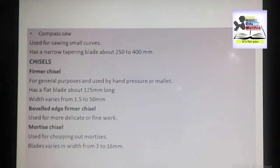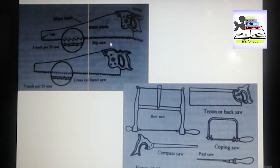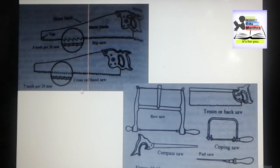Here in the figure, the rip saw is used for cutting along the grain, while the cross cut hand saw is used for cutting across the grain.